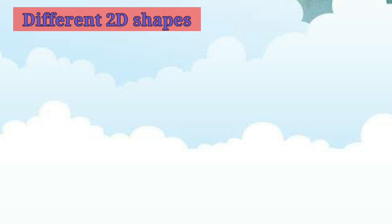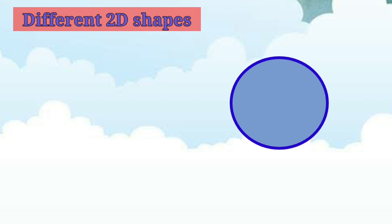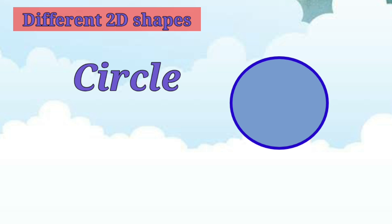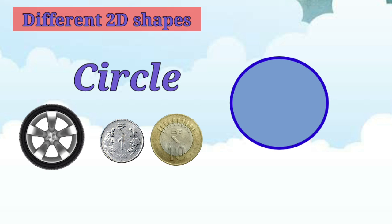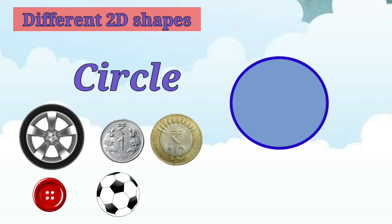Now, children, tell me, what shape is this? It's a circle shape. A circle is round in shape and it has curved lines. A circle has no sides or corners. Examples of circles are tyre, coins, button, and football.